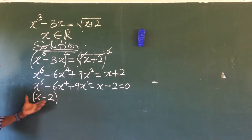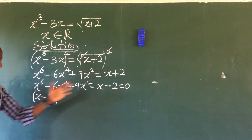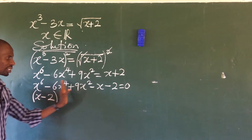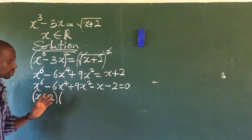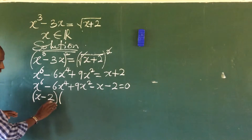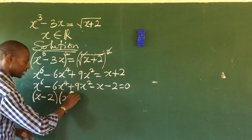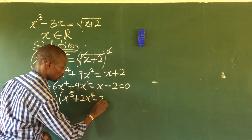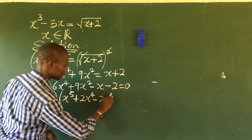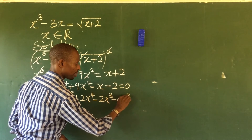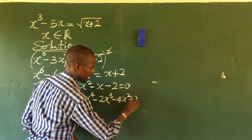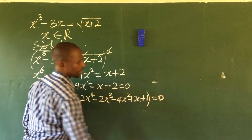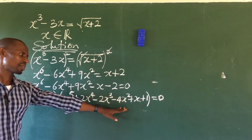Now that we have x minus two as a factor, we divide the full polynomial by it. Due to time constraints I'll skip the long division steps — you can work through those on your own. After dividing, we arrive at a fifth-degree polynomial: x to the fifth plus two x to the fourth minus two x cubed minus four x squared plus x plus one, in brackets, equal to zero.